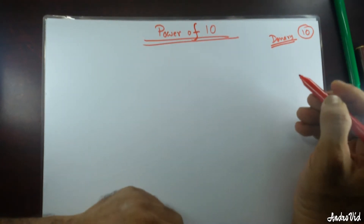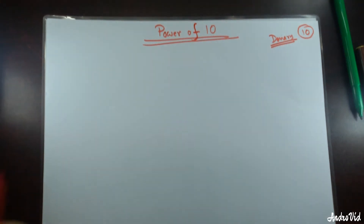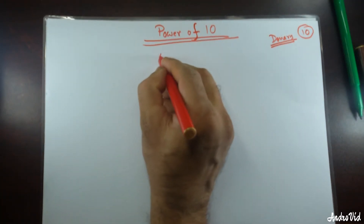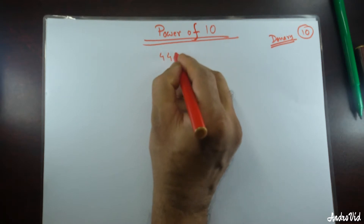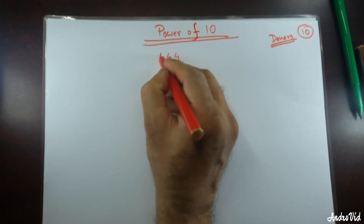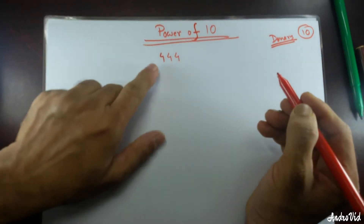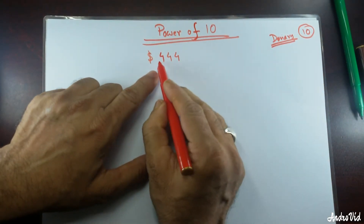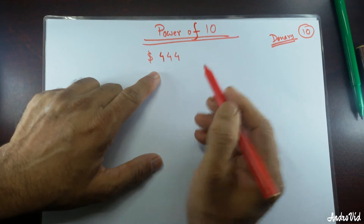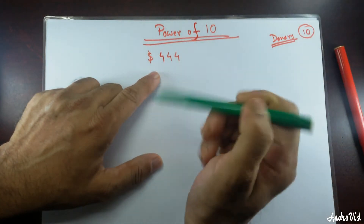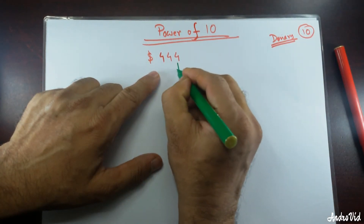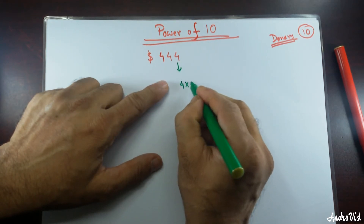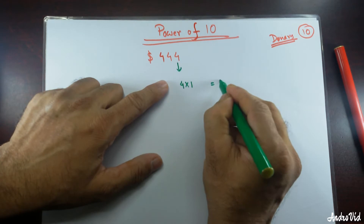What does that really mean? What is your favorite number? My favorite number — let's say it's four. So I'm going to write down three fours right here: four, four, four. If I ask you, if it's dollars, then you can say this is $444. But what does that actually mean? This first one means four times one, that means four.